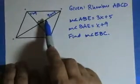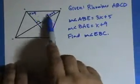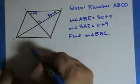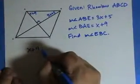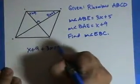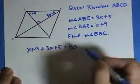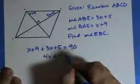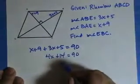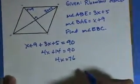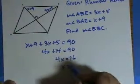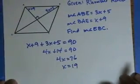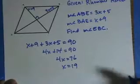If you remember from the last video, those two are complementary. So here's my equation: x plus 9 plus 3x plus 5 equals 90. 4x plus 14 equals 90, 4x equals 76, x equals 19.